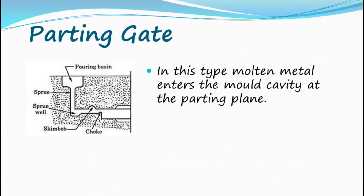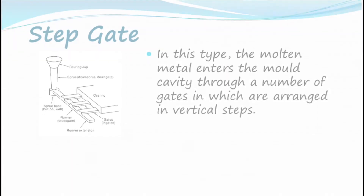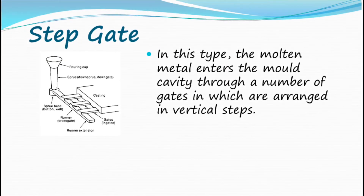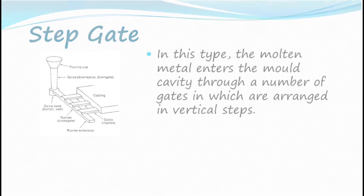Parting gate: In this type, molten metal enters the mold cavity at the parting plane. Step gate: In this type, the molten metal enters the mold cavity through a number of gates which are arranged in vertical steps.